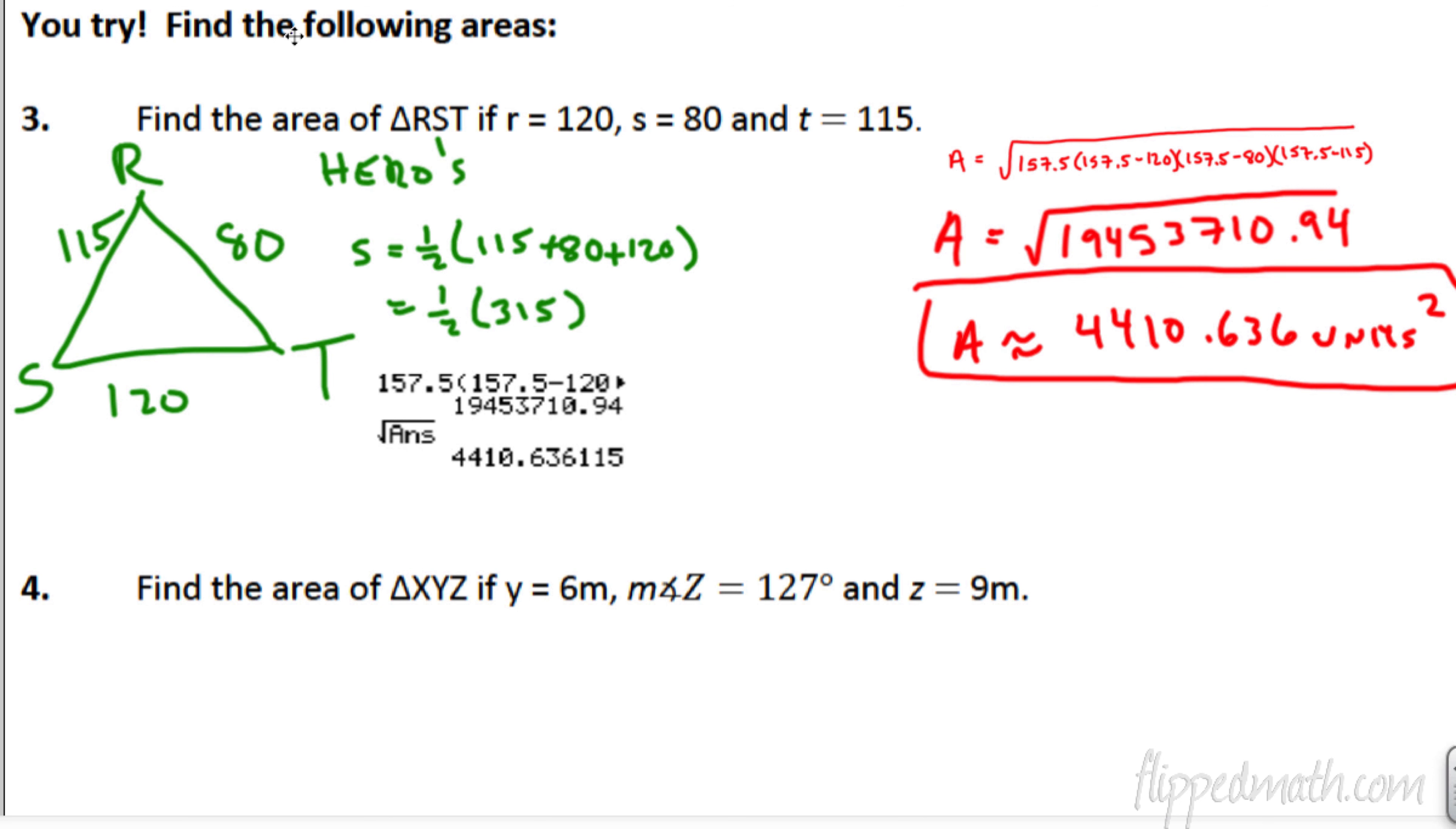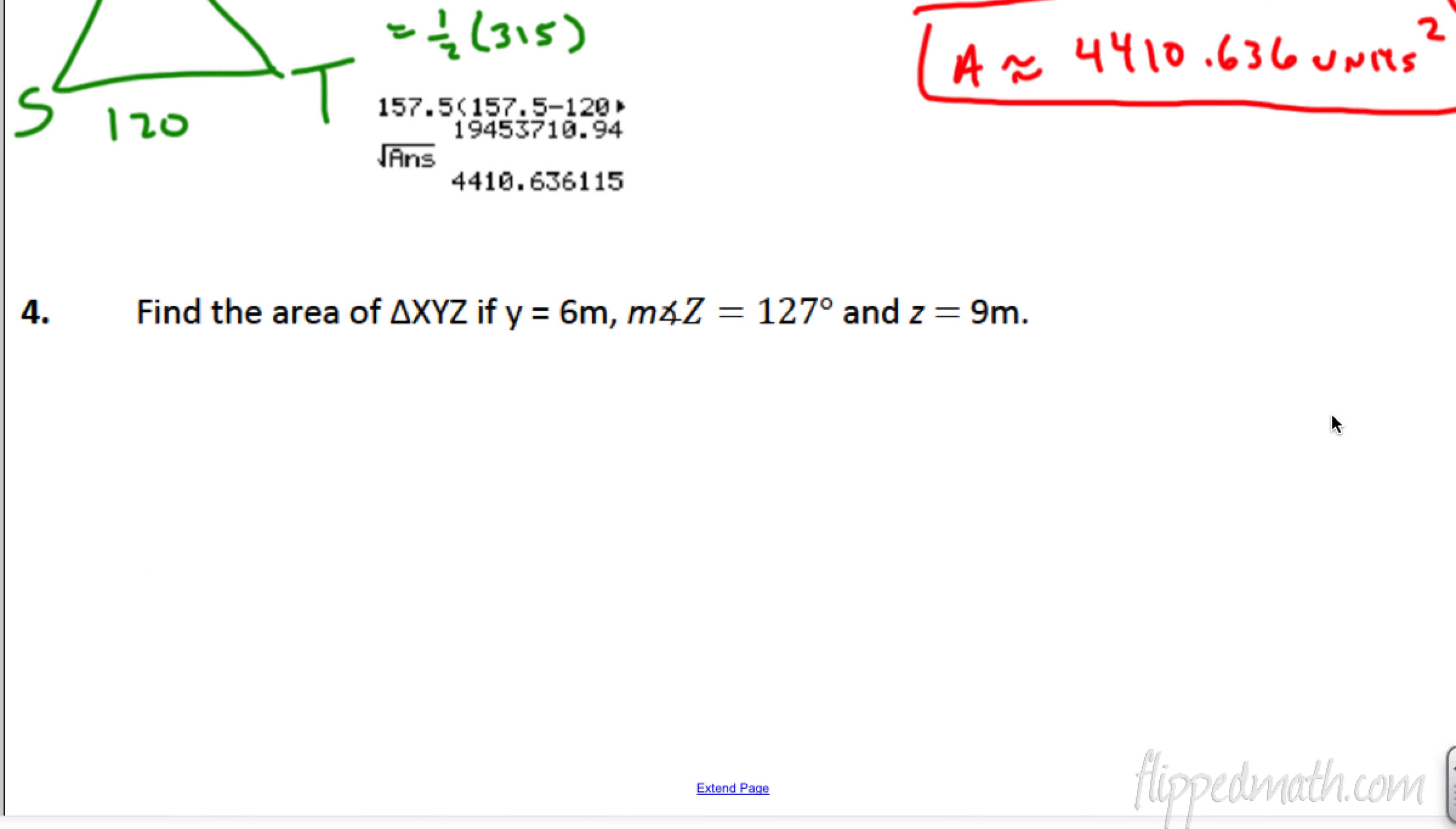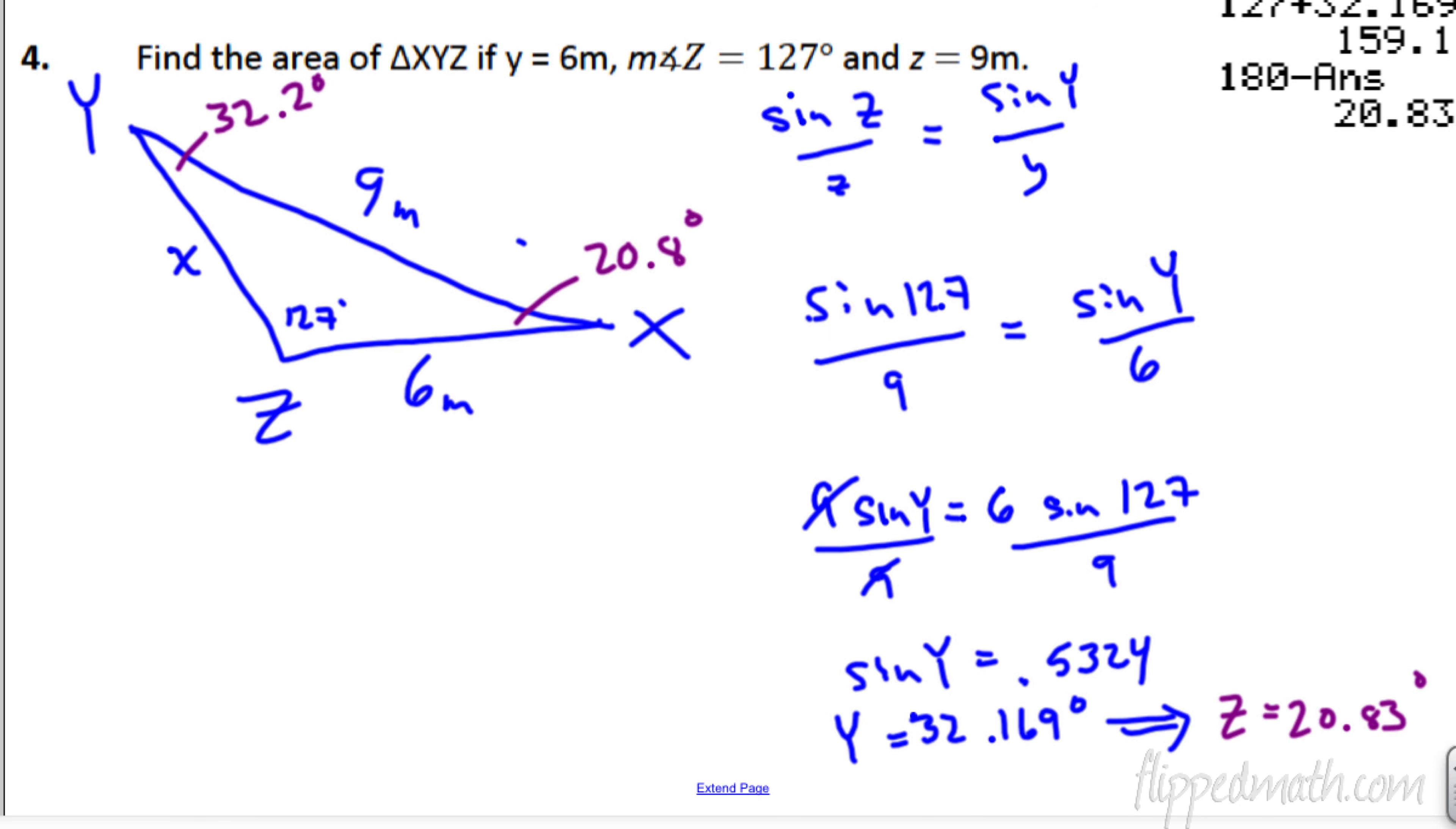So let's look at the answer number 3 here. This is Hero's or Heron's formula. If you plug it all in, you get a semi-perimeter of 157.5. That's what S equals. So, you plug that in with the three sides. You get 4,410.636 square units. They don't give you a unit. So, we're just going to say it's a square unit.